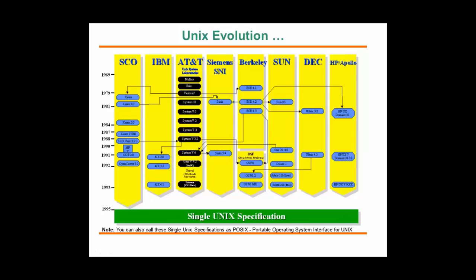Looking at the UNIX evolution slide: after Multics, UNIX came out of AT&T Bell Laboratories and AT&T started releasing their own versions. At the same time, Sun, HP, and IBM took the initial source code and started releasing their own platforms. It got enormous support from the industry — initially designed for response time, it quickly evolved to address many other things.